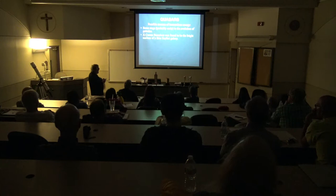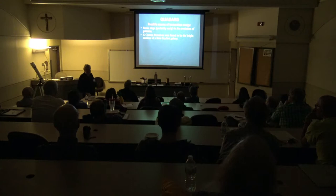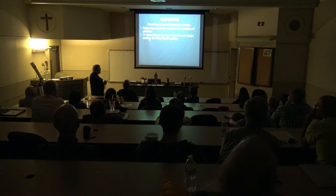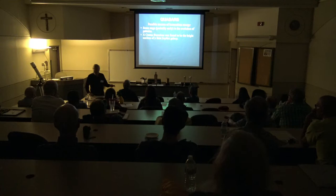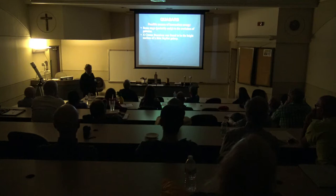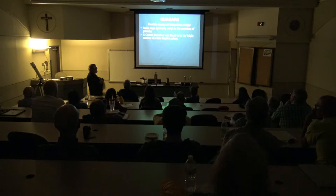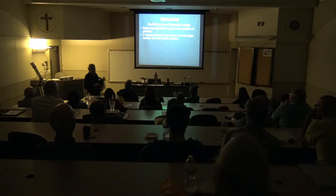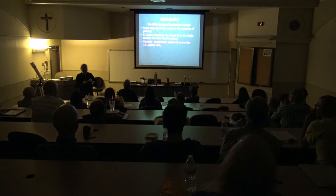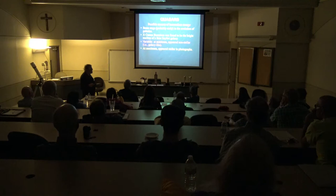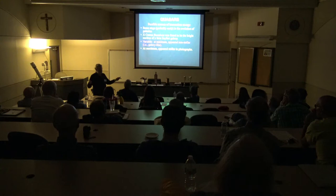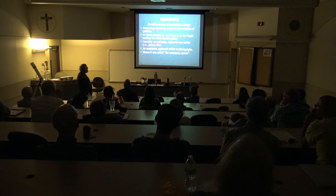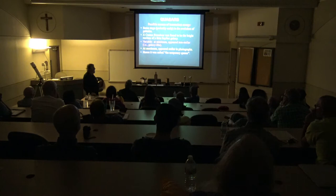EX Comae Berenices was classified as a variable star but turned out to be the bright nucleus of a faint Seyfert galaxy. A Seyfert galaxy, named after Carl Seyfert who was a professor at Vanderbilt, is a galaxy with an unusually bright nucleus. When at minimum, you could see the rest of the galaxy; when at its brightest, the nucleus would wash out the rest and it would just look like a star — Sky and Telescope called it a 'Temporary Quasar.'